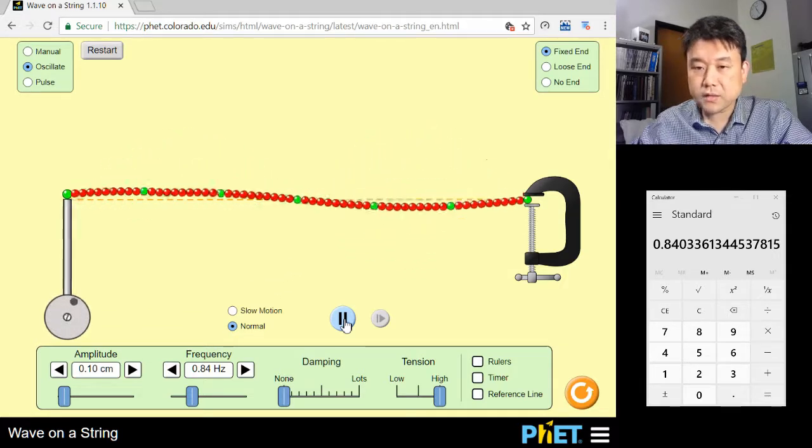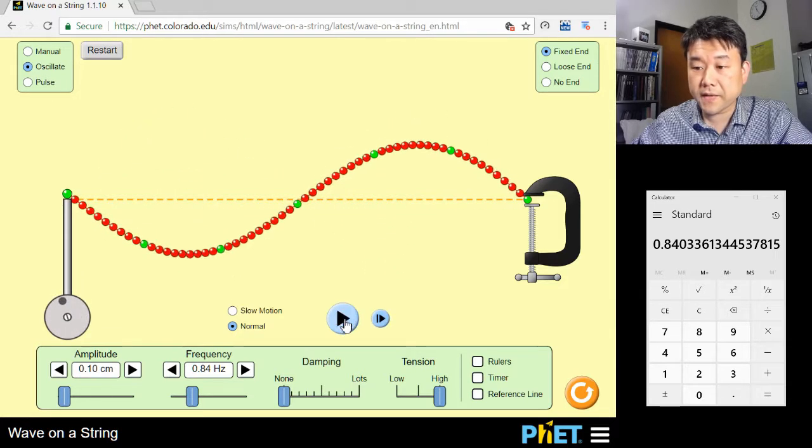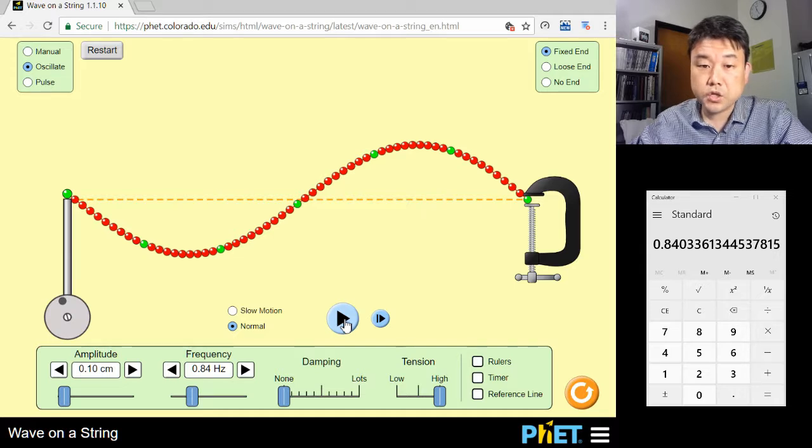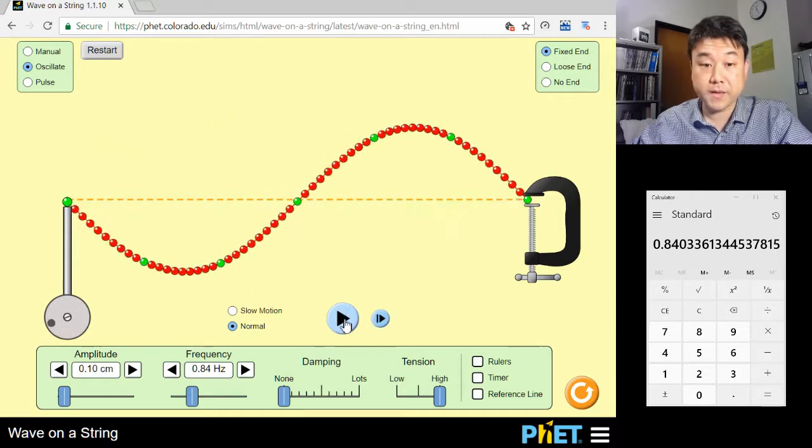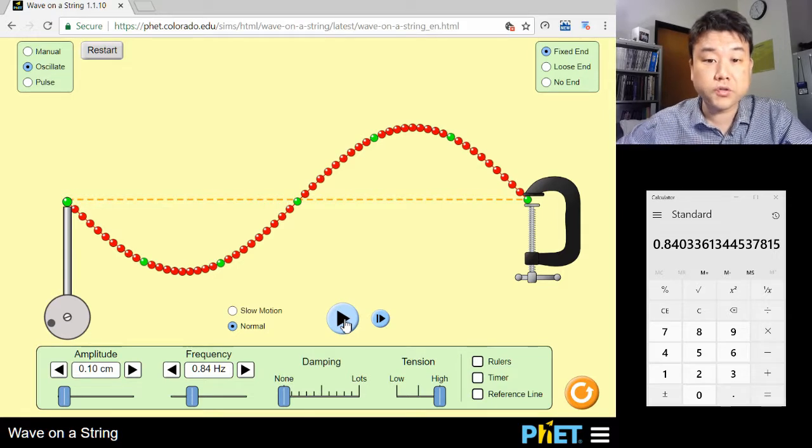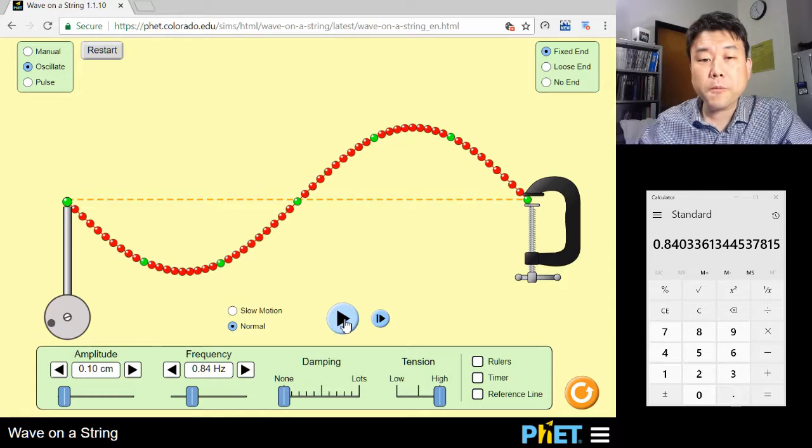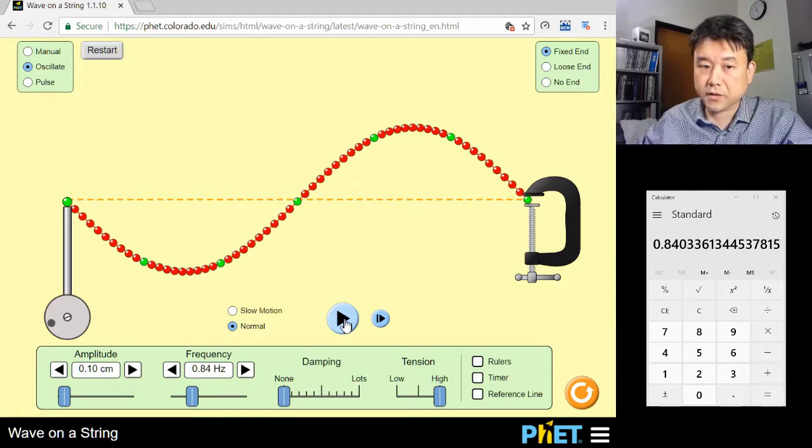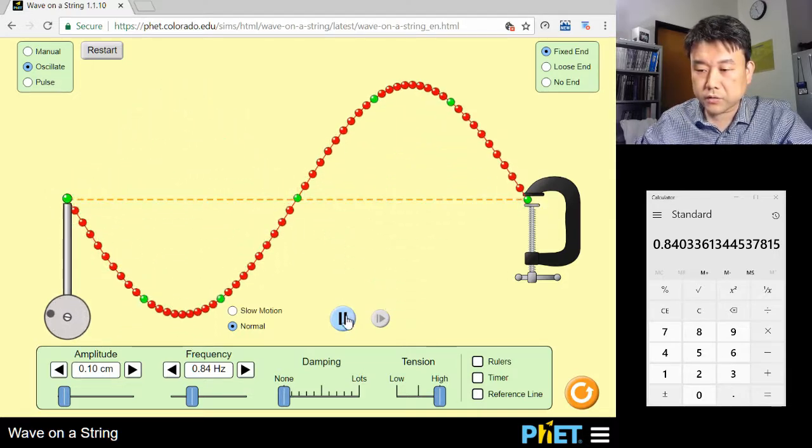There is some energy stored in this string that is oscillating up and down. And at this resonance frequency, each push and pull of the driver happens at the right moment to continue adding energy to this oscillation. As you look at this standing wave, I hope you noticed the standing part of the standing wave. These spots that do not move at all are called nodes.